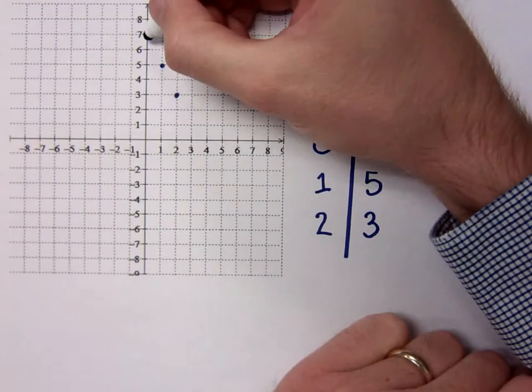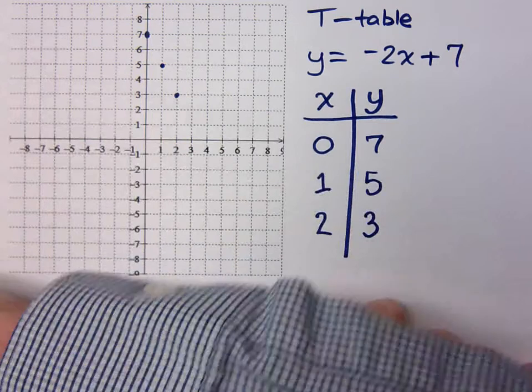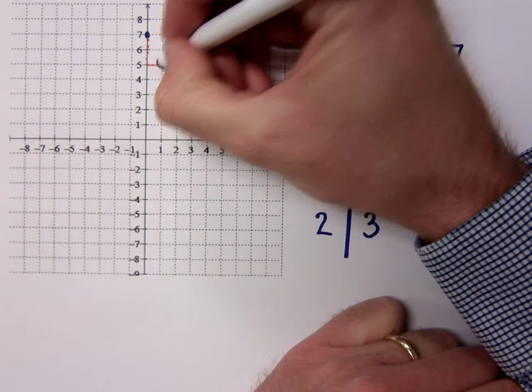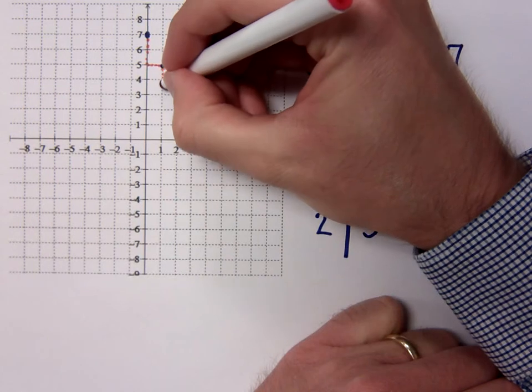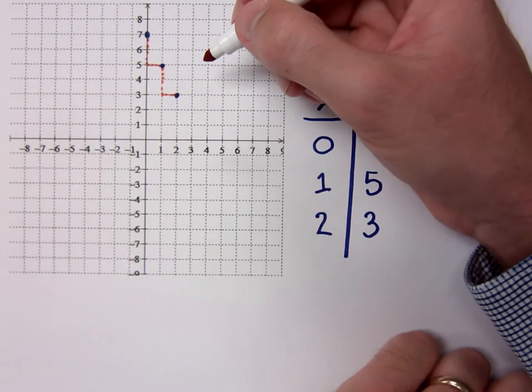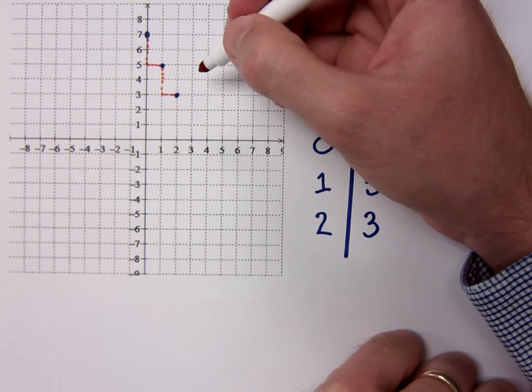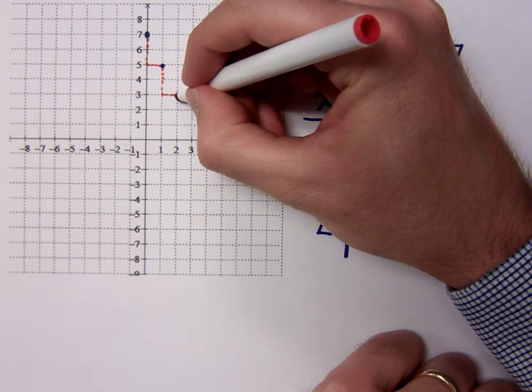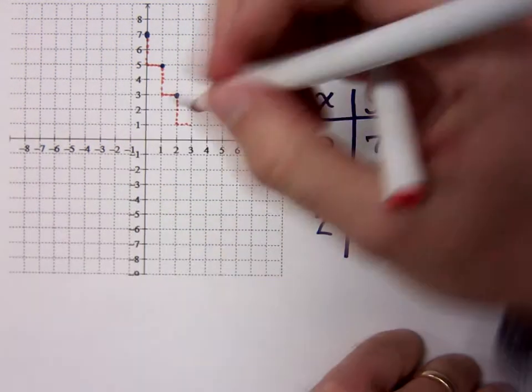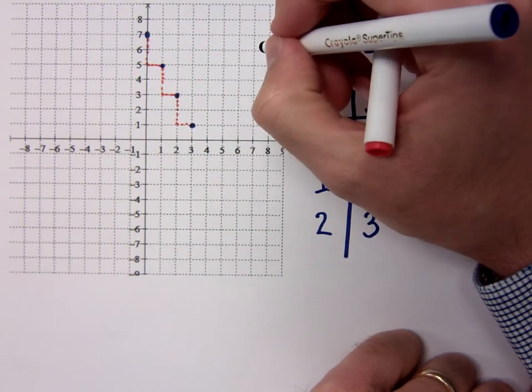When you look at this, as you go from point to point, look what you're doing. You're going down 2 and over 1. Down 2 and over 1. So it only seems to make sense that if I keep going in that same pattern, I'll find other points, other solutions for this equation. If I go down 2 and over 1, I get another point. You guys with me on that?